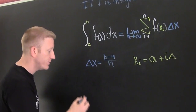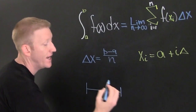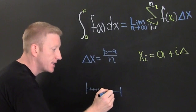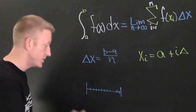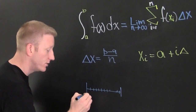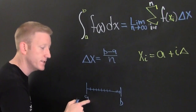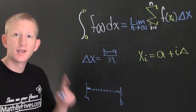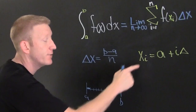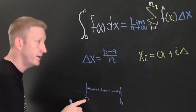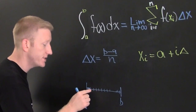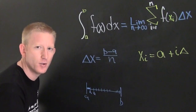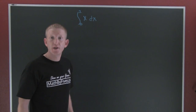Why? Because if you have n sub-intervals — one, two, three, four, five, six, seven, eight... dot dot dot — n sub-intervals, the width of each interval is going to be the big one minus the small one divided by the number of intervals, giving you that little width. And then the x-value you're evaluating at starts at the first one, then plus one interval for x1, plus one more interval for x2, and so on and so forth.